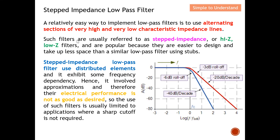Such filters are usually referred to as step impedance or high-Z and low-Z filters. They are popular because they are very easy to design and they take up less space compared to a similar low pass filter using stubs. They are much easier to design and more compact, hence this is always a preferred method, especially if you don't have much clue on how to design a low pass filter.